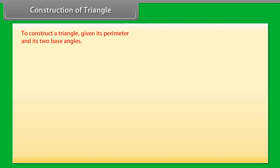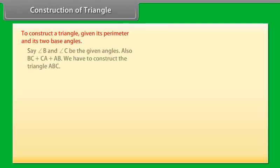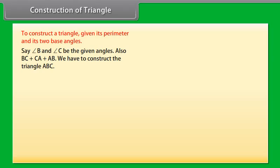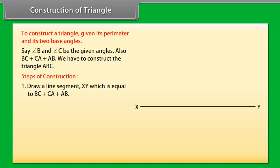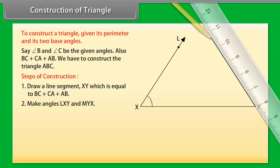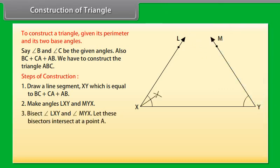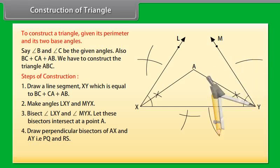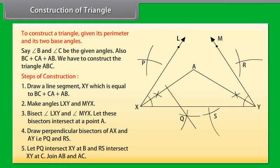Now let us construct a triangle given its perimeter and its two base angles, say angle B and angle C. Also given is BC plus CA plus AB. Draw a line segment XY equal to BC plus CA plus AB. Make angles LXY and MYX. Bisect angle LXY and angle MYX. Let these bisectors intersect at point A. Draw perpendicular bisectors of AX and AY, that is, PQ and RS. Let PQ intersect XY at B and RS intersect XY at C. Join AB and AC. Then ABC is the required triangle.